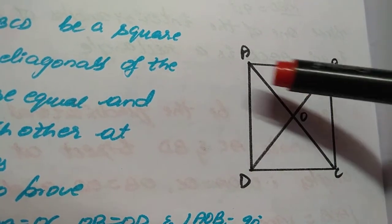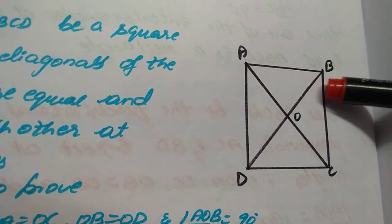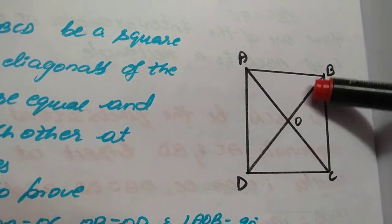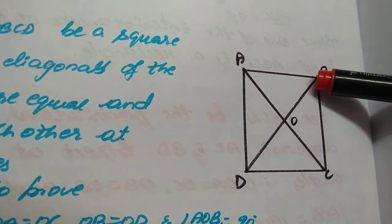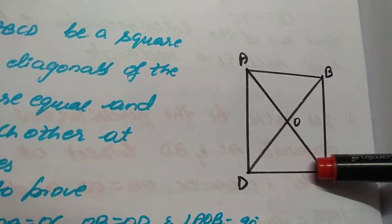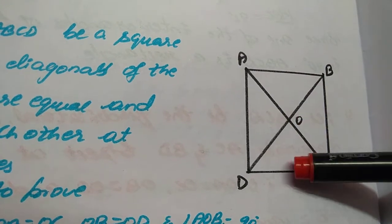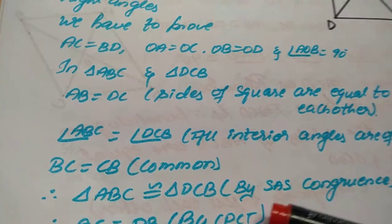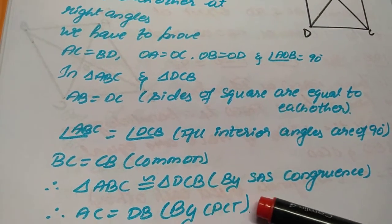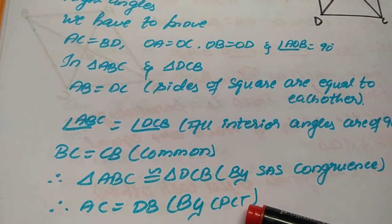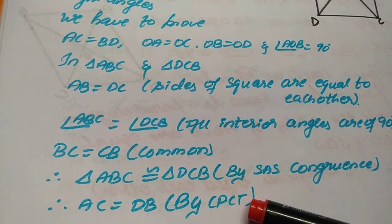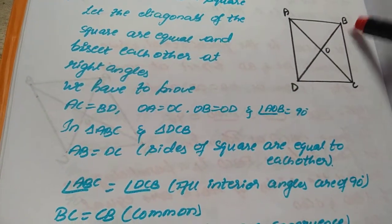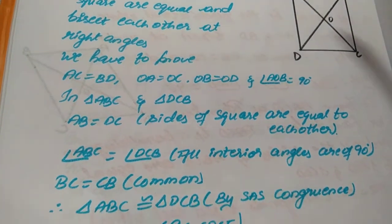One more similarity: angle ABC equal to angle DCB — both are 90 degrees. So we have side, angle, side of one triangle equal to side, angle, side of the second triangle. Hence, triangle ABC is congruent to triangle DCB by SAS congruence. Hence, by CPCT, I can say AC equal to DB. That means diagonal AC equals diagonal DB. Now the first part is proved.